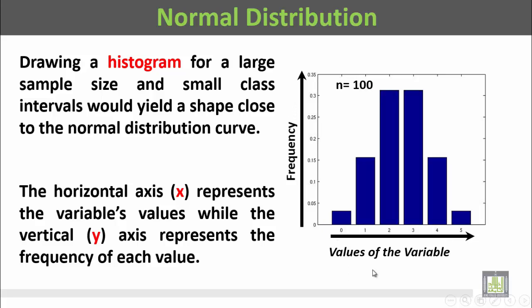The horizontal axis describes the values of the variable while the vertical axis describes the frequency of each category, of each class in the variable.